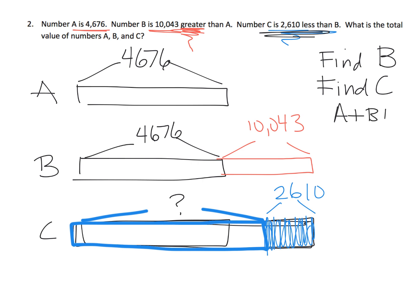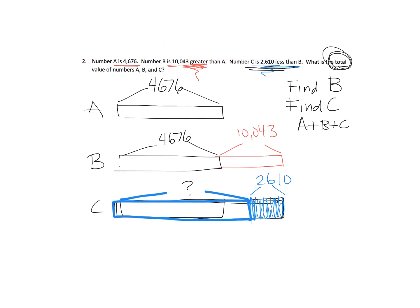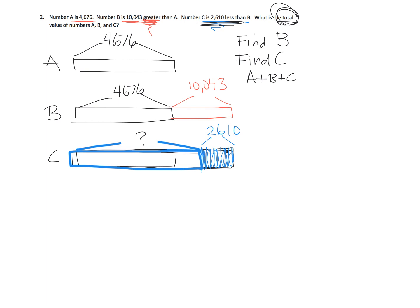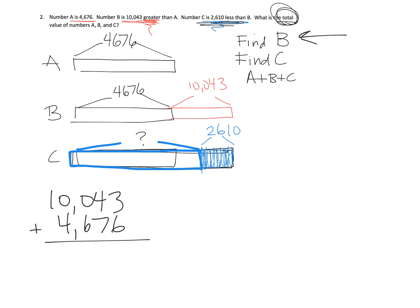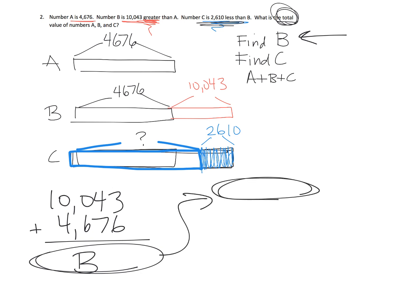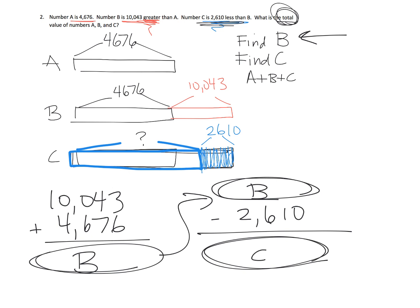Then our third step is to add A plus B plus C because we're supposed to find the total. So the solution strategy in detail: first, find B by adding 10,043 plus 4,676. Then find C by taking that value of B and subtracting 2,610, because C is shorter than B. And that gives us C. Then all we have to do is add A plus B plus C. That's our full strategy.